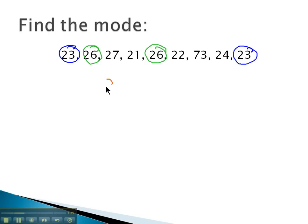We have two modes in this data set. 23 and 26 are our two modes that occur more than the rest of the data.